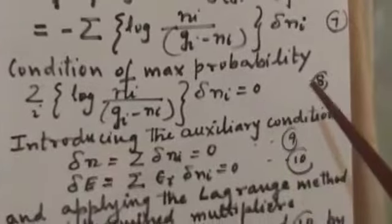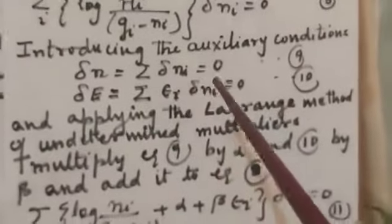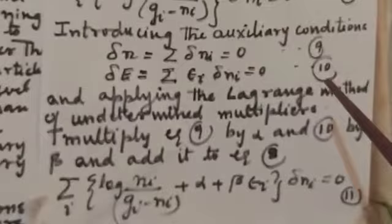Now condition of maximum probability is that delta equals 0, that is equation number 8. Now we use auxiliary conditions: delta N is equal to summation delta NI equals 0, number of particles cannot change. Delta E is equal to summation I epsilon I delta NI equals 0, energy also doesn't change, this is equation 10. Now we use Lagrange method of undetermined multipliers. Multiply equation 9 by alpha, equation 10 by beta, and add to equation 8. So we get summation I, log NI divided by GI minus NI plus alpha plus beta epsilon I into delta NI equals 0, equation 11.